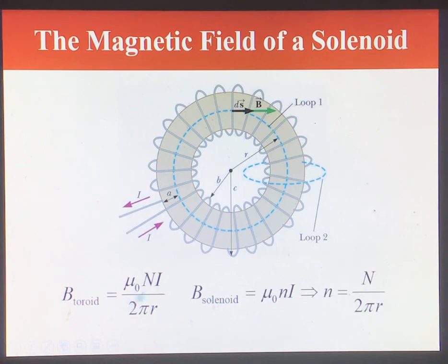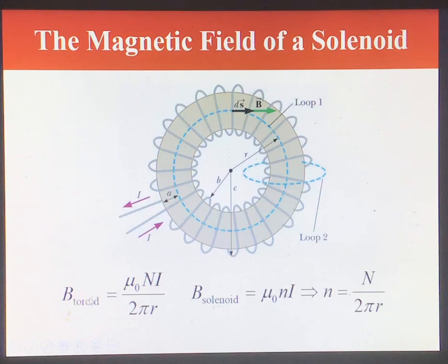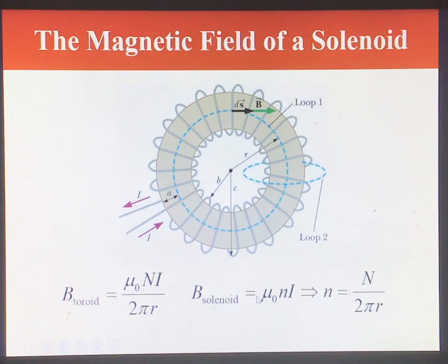Comparing the magnetic fields of a toroid and a solenoid: if the number of turns per unit length n is chosen equal to N / (2 pi r), the magnetic field of the toroid equals that of the solenoid. In this section, focus on understanding Ampere's law itself, and for the solenoid and toroid just understand how to use these final expressions derived from applying Ampere's law.